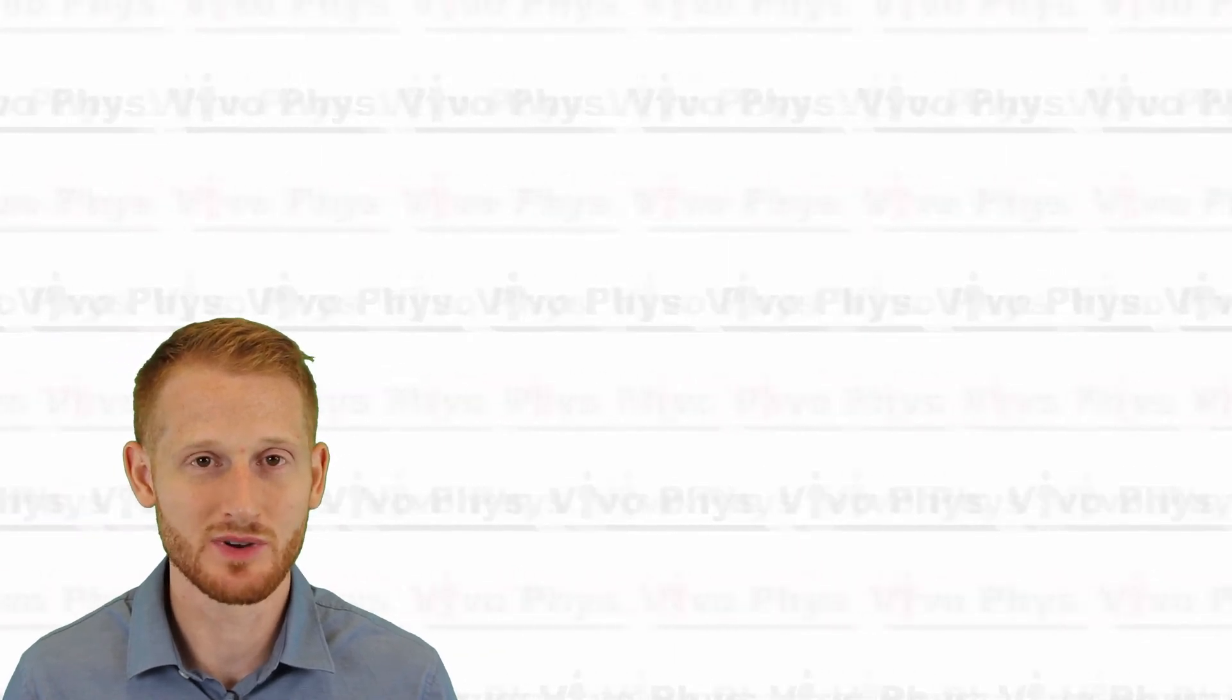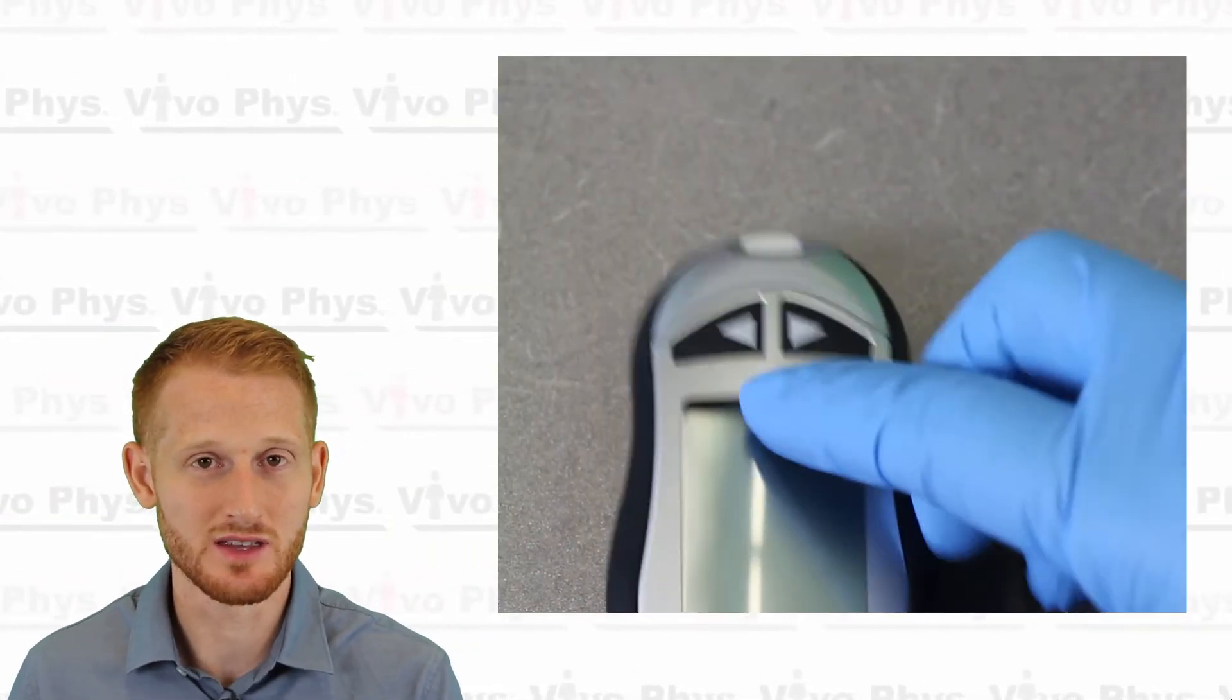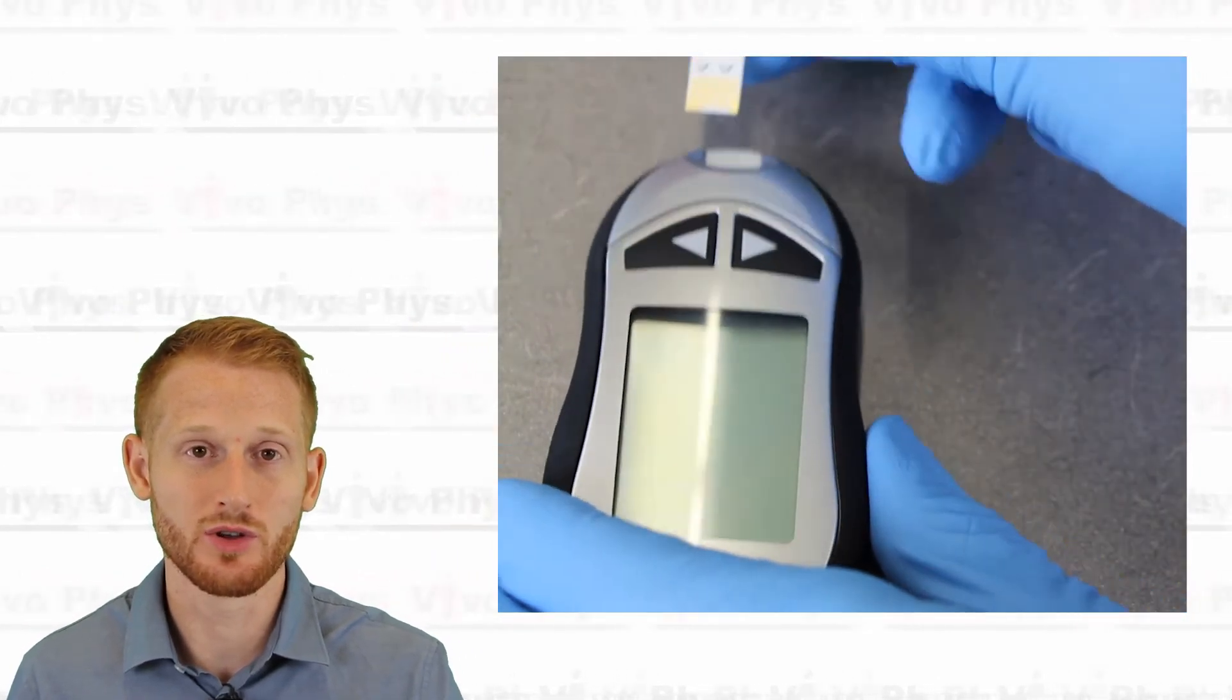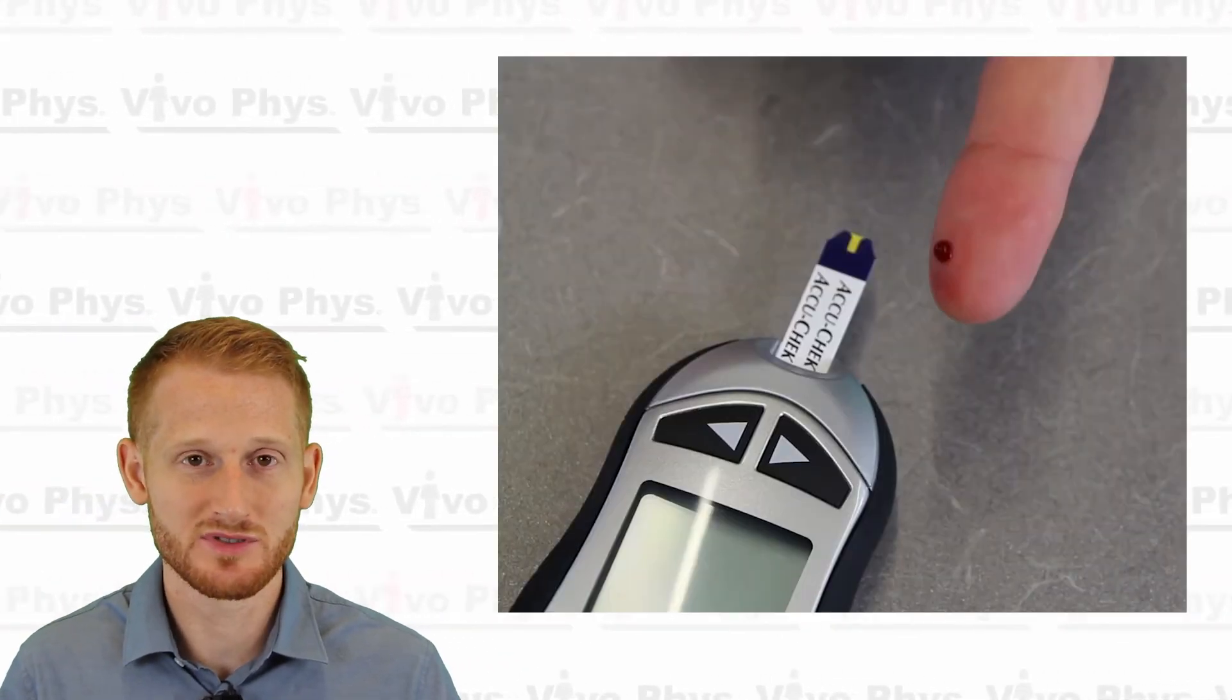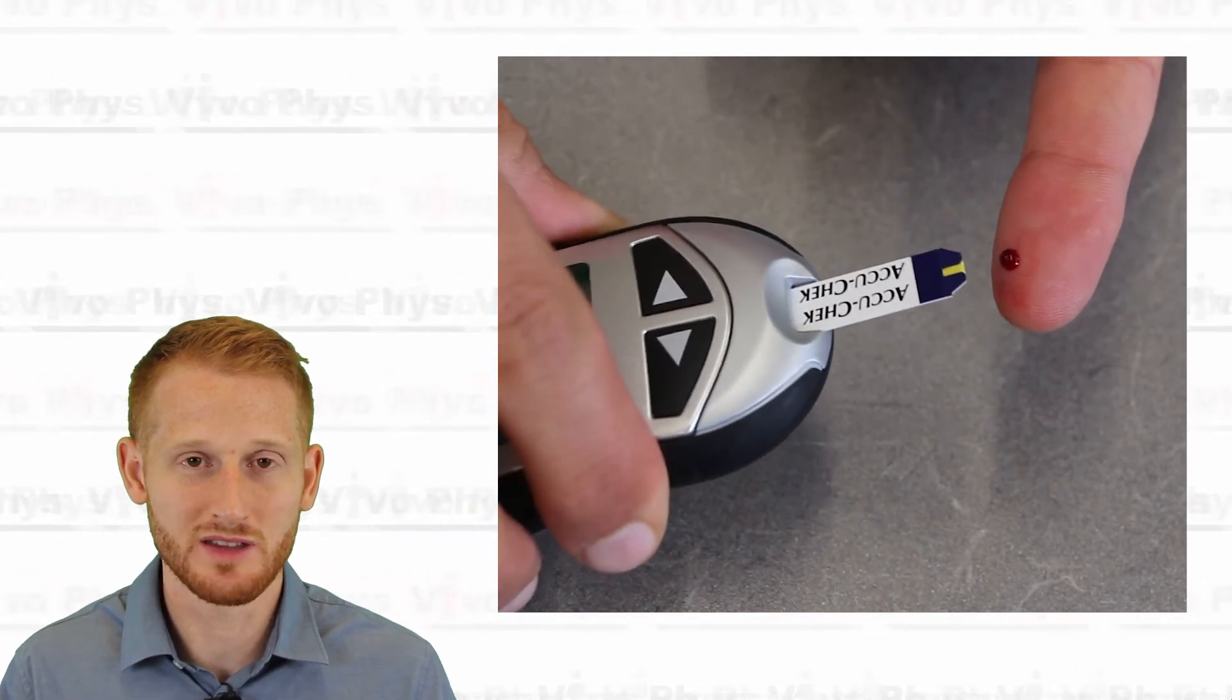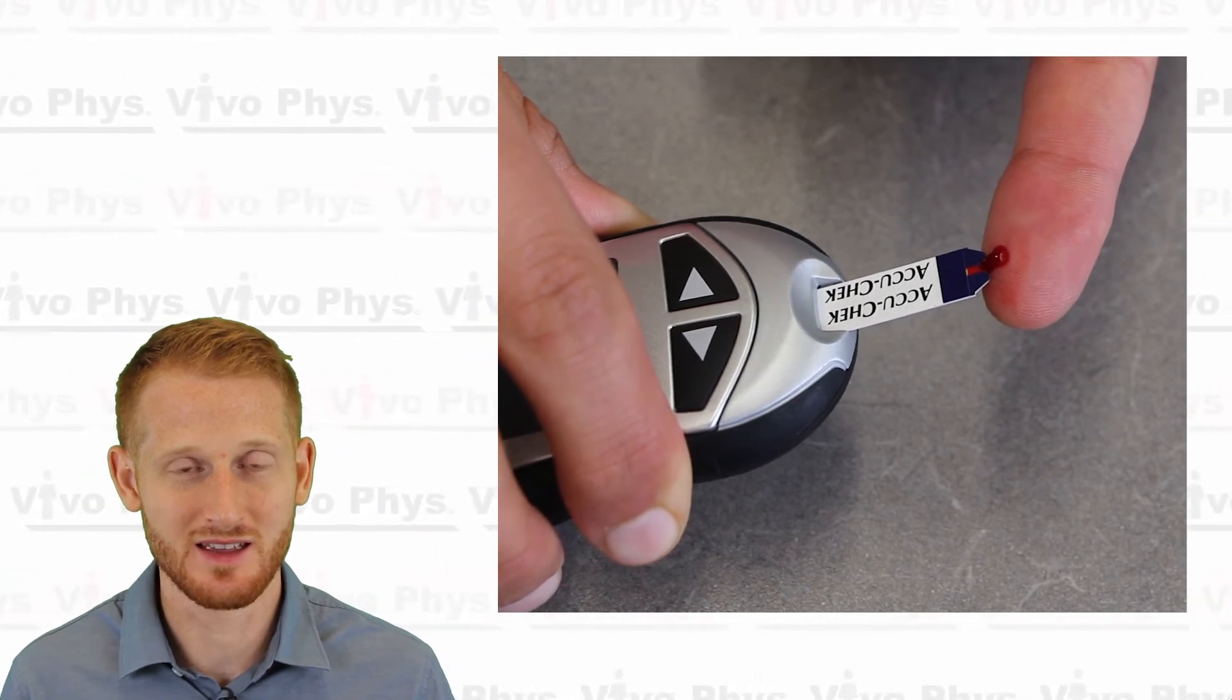So performing a blood glucose measurement is exactly the same as performing a blood lactate measurement. You're going to use a glucometer instead of a lactate meter, that's the only real difference. So you're going to take the glucometer and the glucose strip, and you're going to put the glucose strip into the glucometer, it'll activate the screen on the glucometer, and then you simply put the tip of the strip where the channel is against the edge of the bubble of blood that you create on the finger, and it's going to suck that blood into the strip just like it did with lactate.